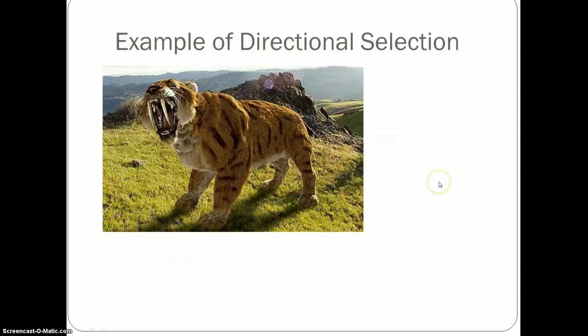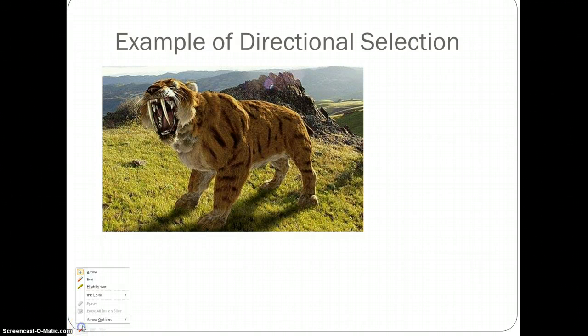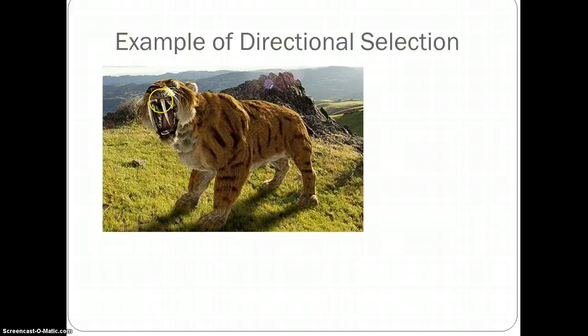In an example, we'll have the saber-toothed cat. People call it the saber-toothed tiger, but its actual name is the saber-toothed cat. If we look at these teeth of the saber-toothed cat, we see how long they are. This was an evolutionary trait. In each generation, these teeth continued to grow longer. Why is this? Why did the teeth continue to grow longer? Well, these longer teeth allow the saber-toothed cat to grasp onto the prey and puncture its jugular vein, which allows it to kill the organism faster. So it made them a better predator.